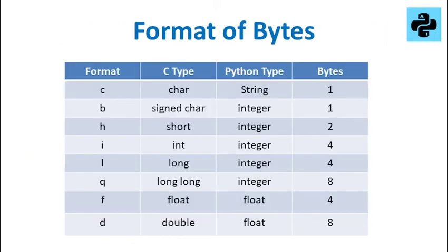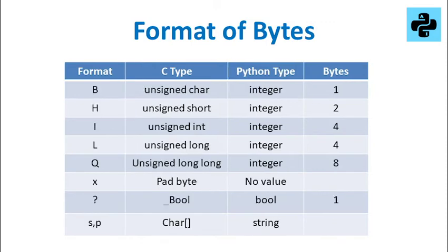This table shows a variety of formats we can use. The small letters are mainly used to indicate signed C types. On the other hand, mostly unsigned C types are indicated by the capital letters.